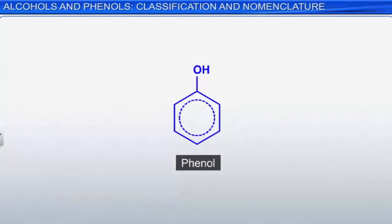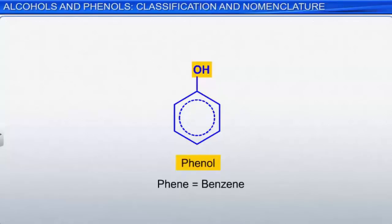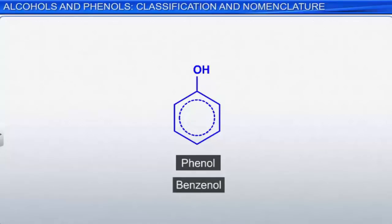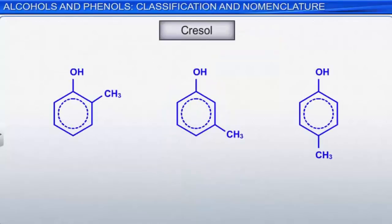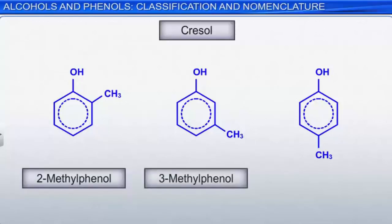Let's turn our attention to the class of organic molecules called phenols. Phene is an old name for benzene, so benzene containing one hydroxyl group is known as phenol. Although the systematic name is benzenol, phenol is an accepted IUPAC name and can be used as the basis for naming phenol derivatives. Toluene is an important benzene derivative with one methyl group attached to the aromatic ring. Cresol is the name for toluene molecules that have one hydroxyl group in addition to the methyl group; there are 3 isomers — 2-methylphenol, 3-methylphenol, and 4-methylphenol.